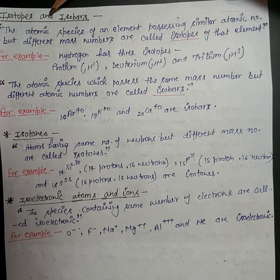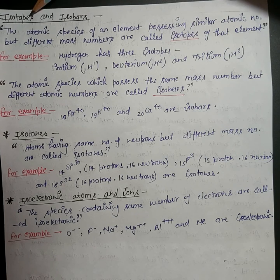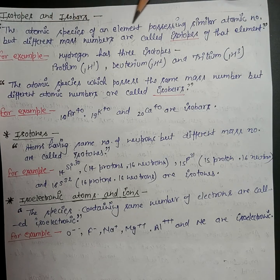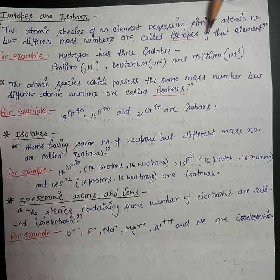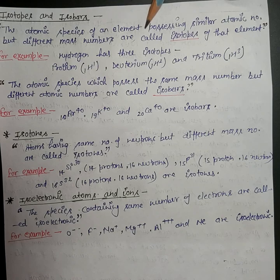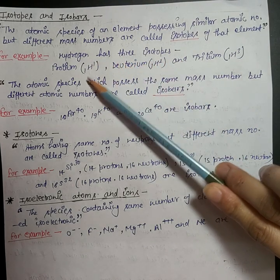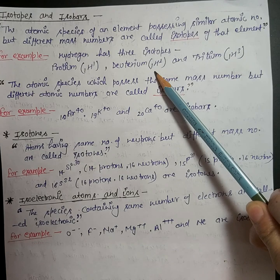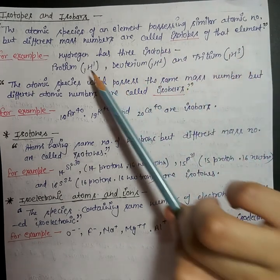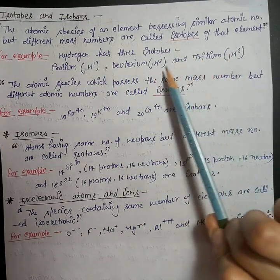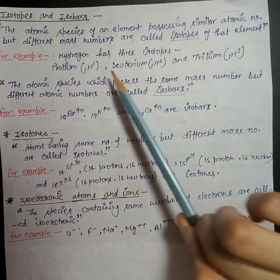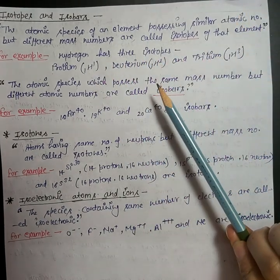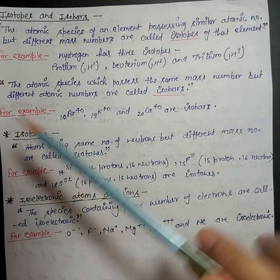Next topic is isotopes and isobars. What are isotopes? The atomic species of an element possessing the same atomic number but different mass number are called isotopes of that element. Isotopes are of the same element. For example, hydrogen has three isotopes: protium ¹H₁, deuterium ¹H₂, and tritium ¹H₃. They all have the same atomic number but different atomic masses.